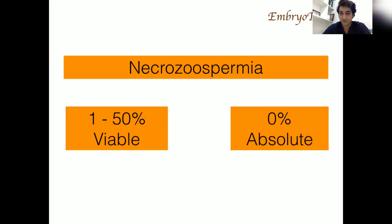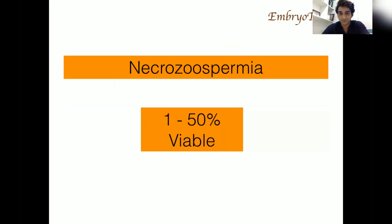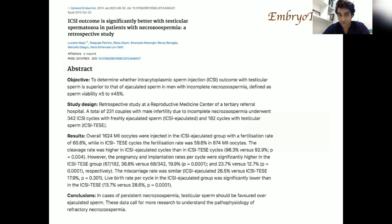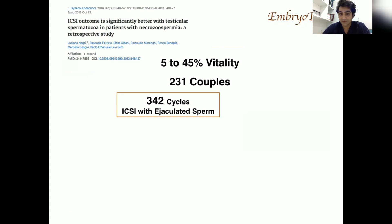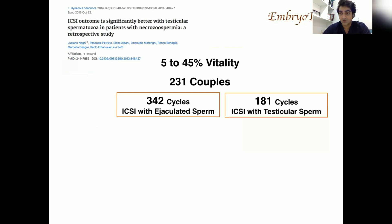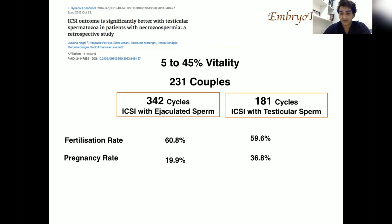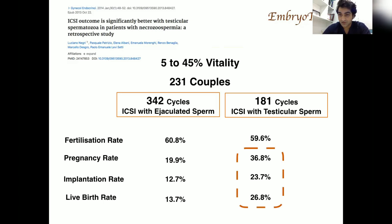In the IVF lab we have two scenarios: one where we have some viability in the semen sample and one where we have no viability at all. For cases with viability between 5 to 45%, a paper published in 2014 studied 231 couples in one arm with ejaculated sperm across 342 cycles, and 181 cycles with testicular sperm on the other. Fertilization rate was similar, but there was a higher pregnancy rate, implantation rate, and live birth rate with testicular sperm. A live birth rate of 26.8% can be achieved using testicular sperm in necrozoospermia.